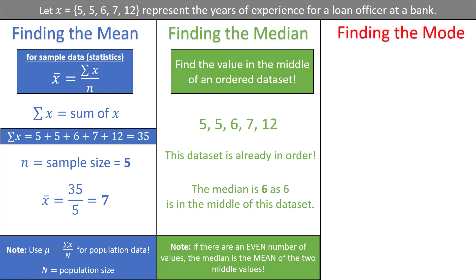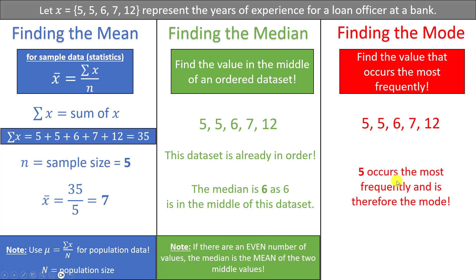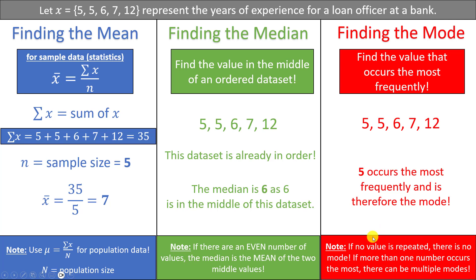Finally, we have the mode, which is another common way to represent the average of a data set. The mode is the value that occurs the most frequently within the data set. For example, if we have the data set 5, 5, 6, 7, and 12, then 5 is the value that occurs the most frequently — twice — and therefore 5 would be the mode. Note that if there are no repeated values in your data set, we would say there is no mode. If more than one value occurs the most, then there could be multiple modes.